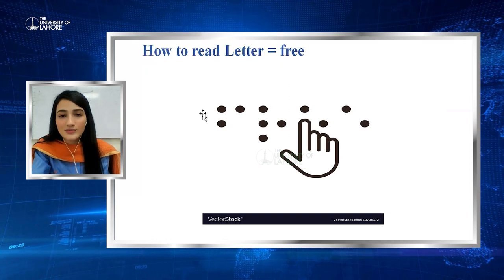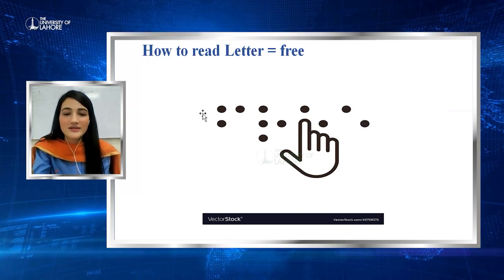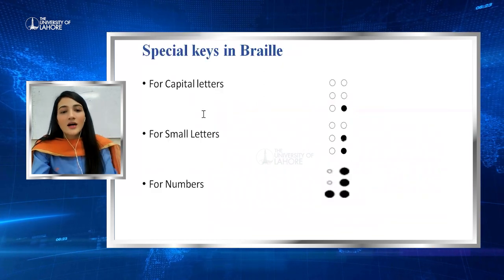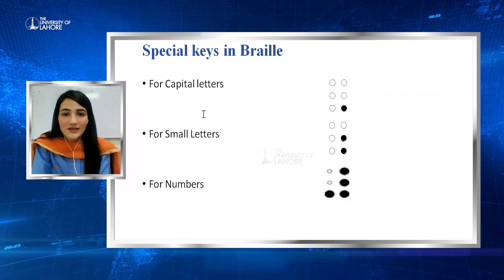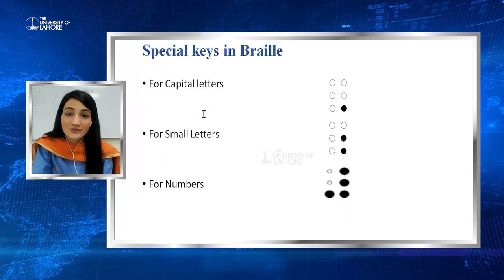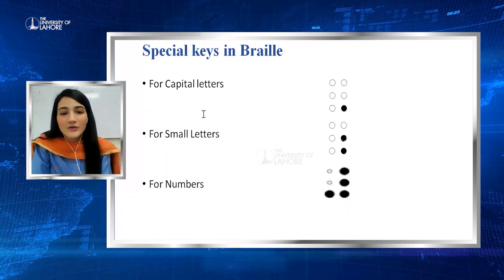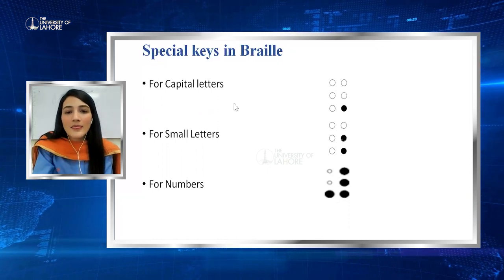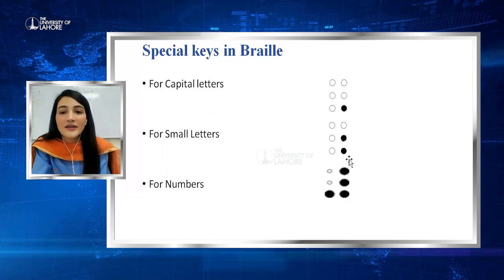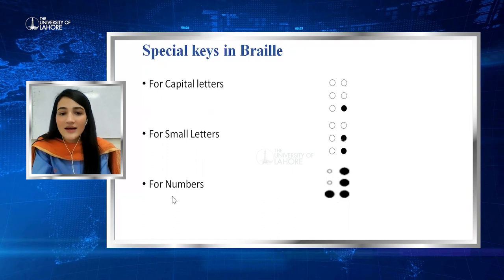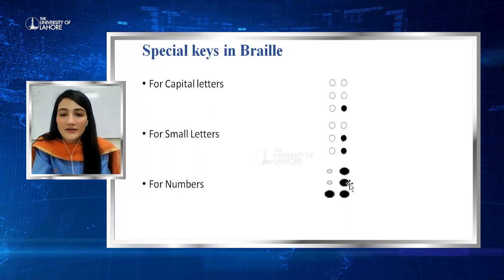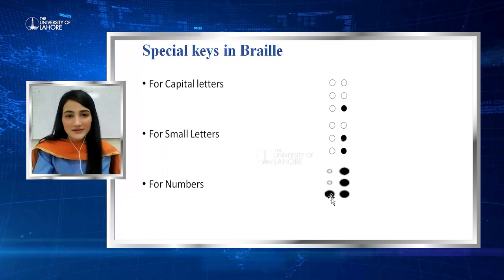This is how you pronounce different words in Braille. There are special indicators: for a capital letter, dot 6 is raised. For a small letter, dots 5 and 6 are raised. For a number, dots 3, 4, 5, and 6 are raised.